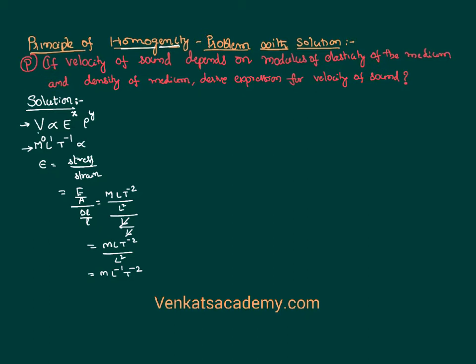I can substitute this value for E. In place of E I write the dimensions as M¹L⁻¹T⁻² raised to the power x. We also need the dimensions of density. Density is defined as mass by volume, so its dimensional formula is ML⁻³. I substitute that value for density as ML⁻³ raised to the power y.